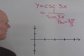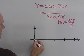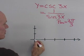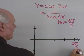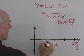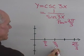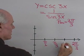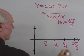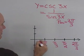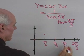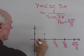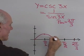So if I graph y = sin(3x), it'll start at 0 and go out to 2pi/3. Halfway will be pi/3. Counting: pi/6, 2pi/6, 3pi/6 — that's pi/2. So my sine graph will start at 0, go up to 1, back down to 0, down to negative 1, and then back up to 0. Here is that graph.